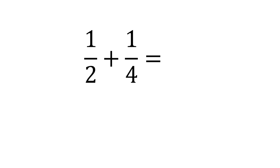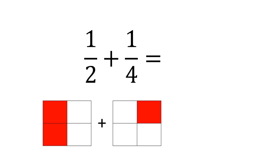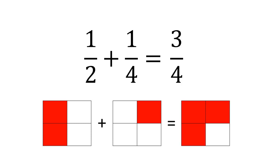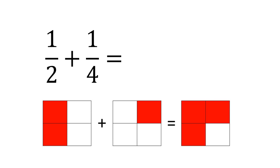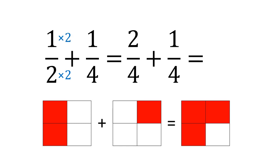What about if our denominators are different? Let's try a half add a quarter. Looking at this in pictures, we can quickly see that a half is two quarters. Adding them together, we get three quarters. Without the diagram, we convert the half into quarters so we have the same denominators. Two goes into four twice, so we multiply the top and bottom of one half by two to get two quarters, which we add one quarter to, giving us three quarters.